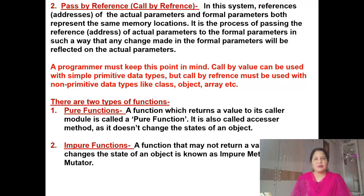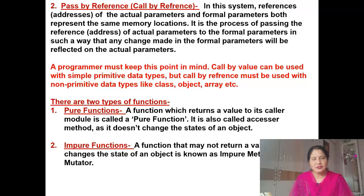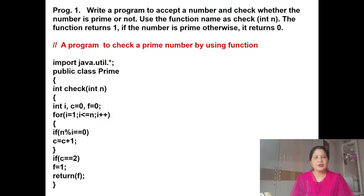Now there are two types of functions: pure functions and impure functions. A function which returns a value to its caller is called a pure function, also called an accessor method, as it does not change the states of an object. An impure function may not return a value but changes the state of an object — that is also known as a mutator method.